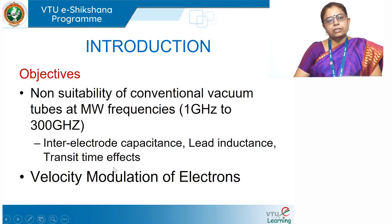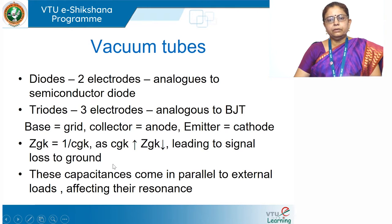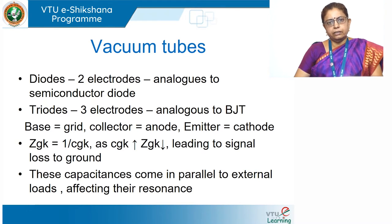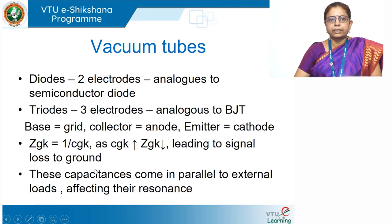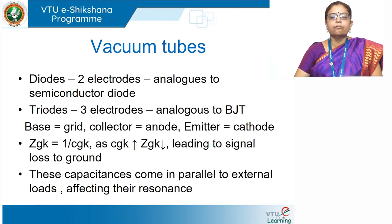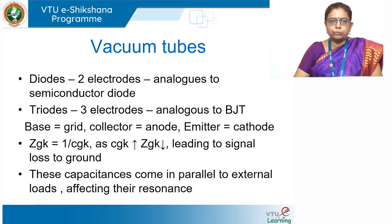Vacuum tubes, as the name implies, are glass tubes which house a structure called the electron gun. The electron gun has an indirectly heated cathode, an anode, and one or two grids. These grids are electrodes in the form of meshes — they have holes between their grid wires. All these are enclosed in an evacuated glass tube.